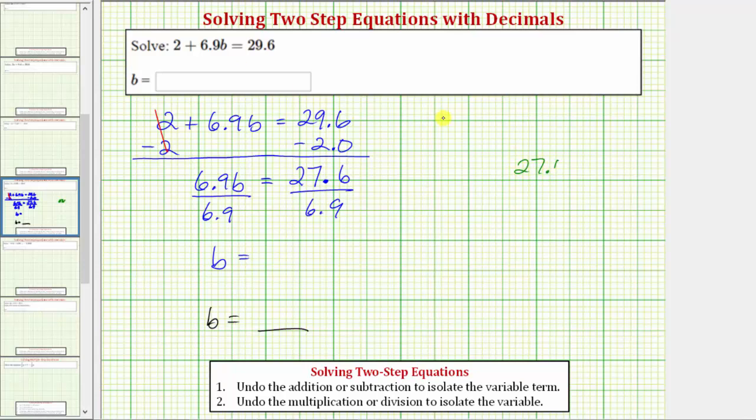We have 27.6 divided by 6.9. We want the divisor to be a whole number, not a decimal. So we'll move the decimal point to the right one place. And we can do this as long as we do the same to the dividend. So we'll move the decimal point to the right here as well.